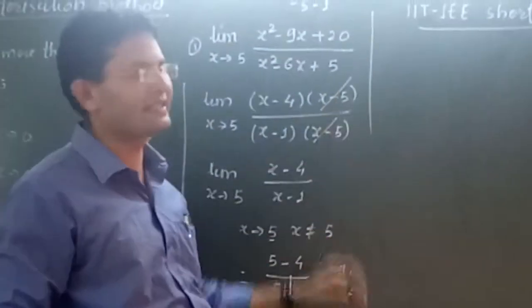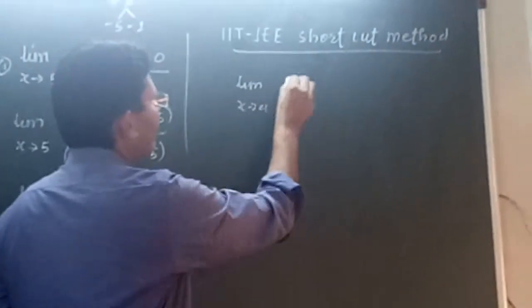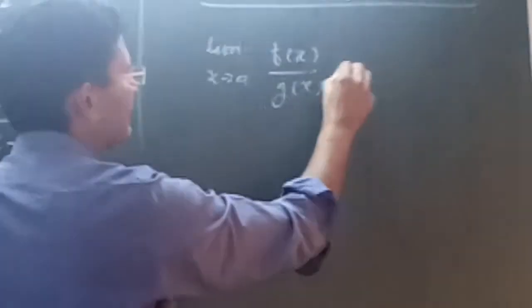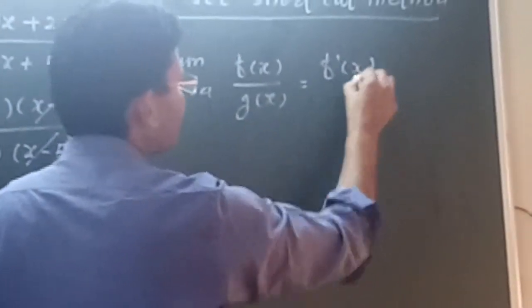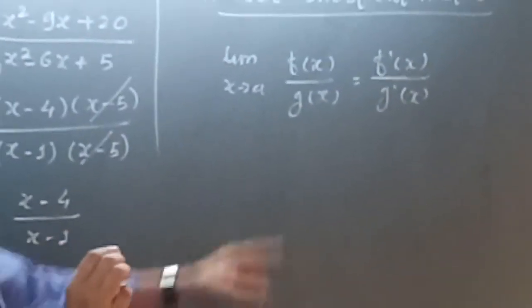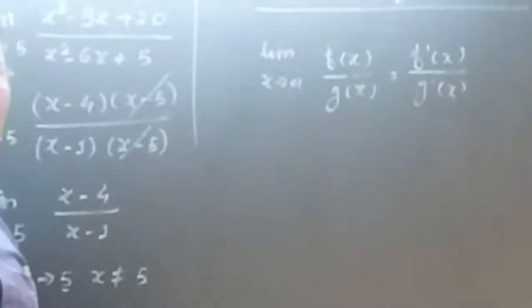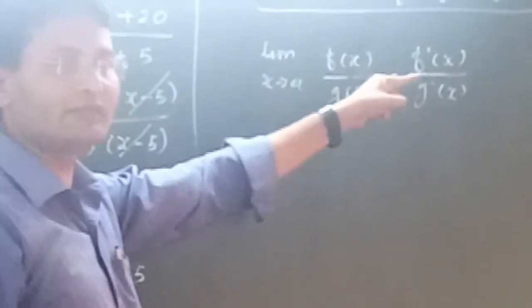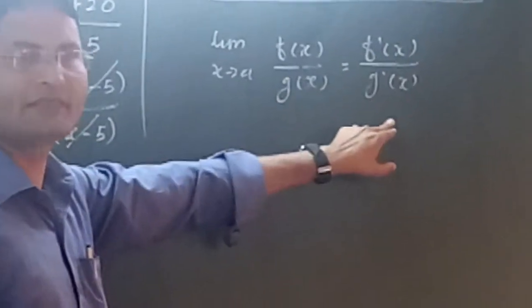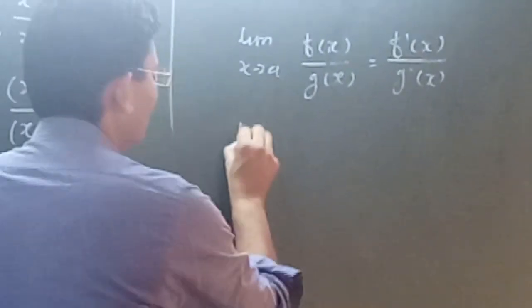Now the shortcut method for IIT and JEE is limit x tends to a, f of x upon g of x is exactly equal to f dash x upon g dash x, which is L'Hospital rule. f of x is the given term and f dash x is the derivative of the term. Now to solve this term with the shortcut method, we will simplify.